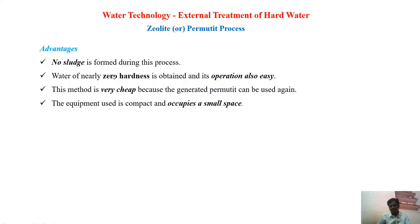Advantages of the permutit process: very low sludge is formed; the treated water coming out has nearly zero hardness; the operation is very easy; the cost to regenerate the permutit is very low because the permutit can be reused many times to treat large volumes of water; and the equipment occupies very little space.